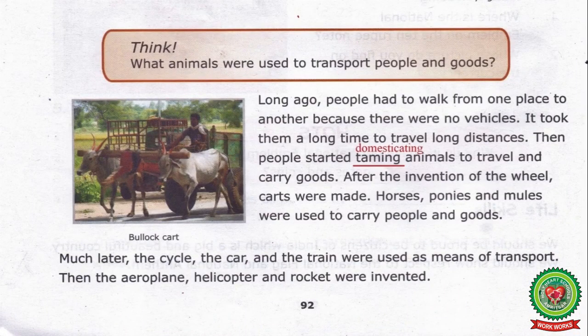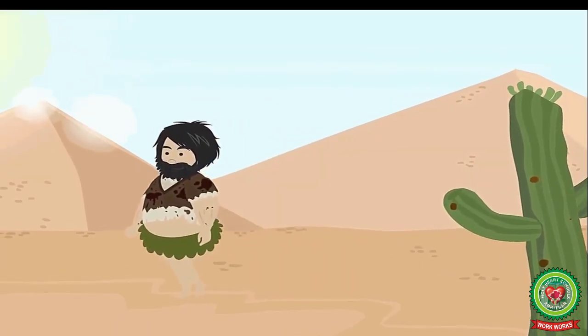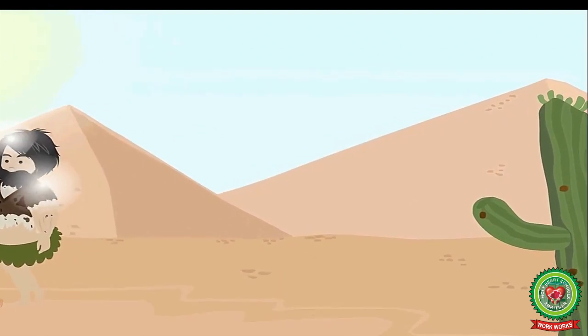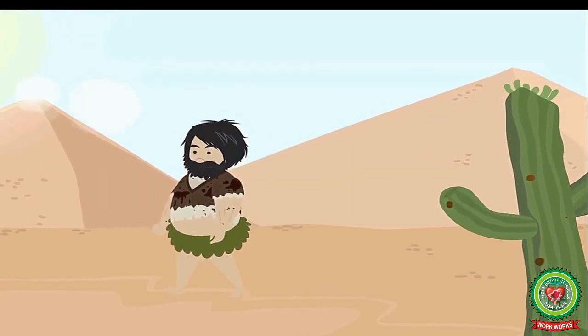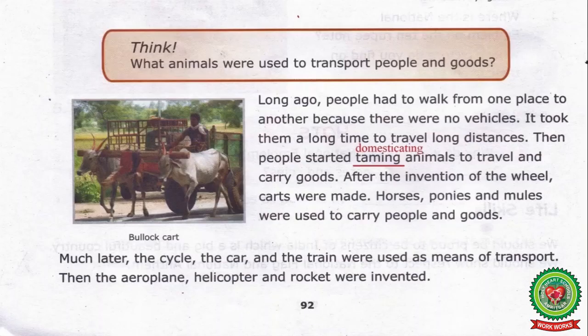Long ago, people had to walk from one place to another because there were no vehicles. They did not have any means of transport and used to move only on foot. It took them a long time to travel long distances. Then, people started taming — meaning domesticating — animals to travel and carry goods.